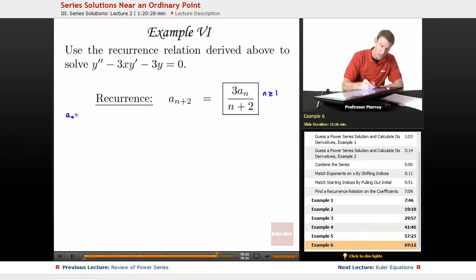A0, there's nothing that has told me what A0 is, nothing in terms of lower coefficients, and the same with A1. So A0 and A1 are arbitrary, I don't know what they are, I'm just going to have to leave them as A0 and A1.